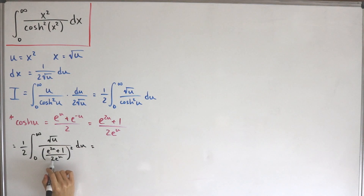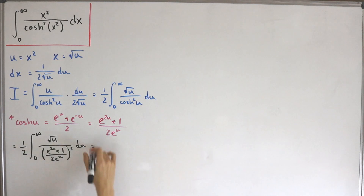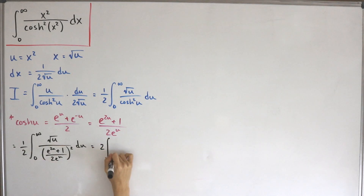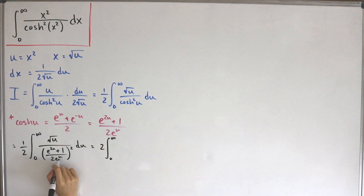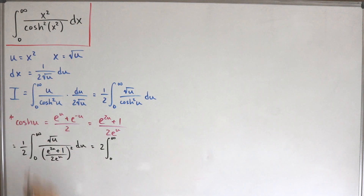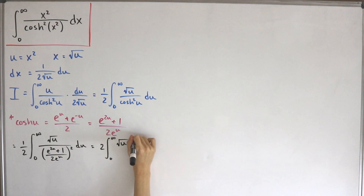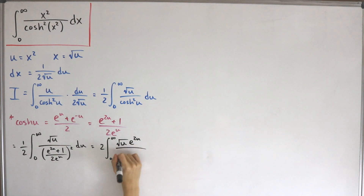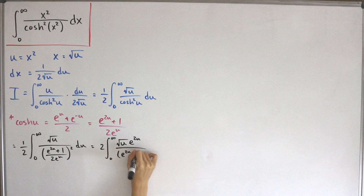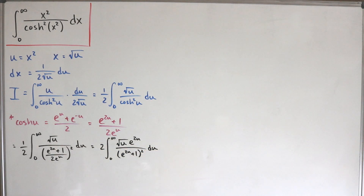Factoring out the one-over-four from the denominator brings a factor of two outside the integral. We then multiply e^(2u) to both numerator and denominator to clear the rational part, leaving us with the square root of u times e^(2u) in the numerator and (e^(2u) + 1) squared in the denominator, then du.